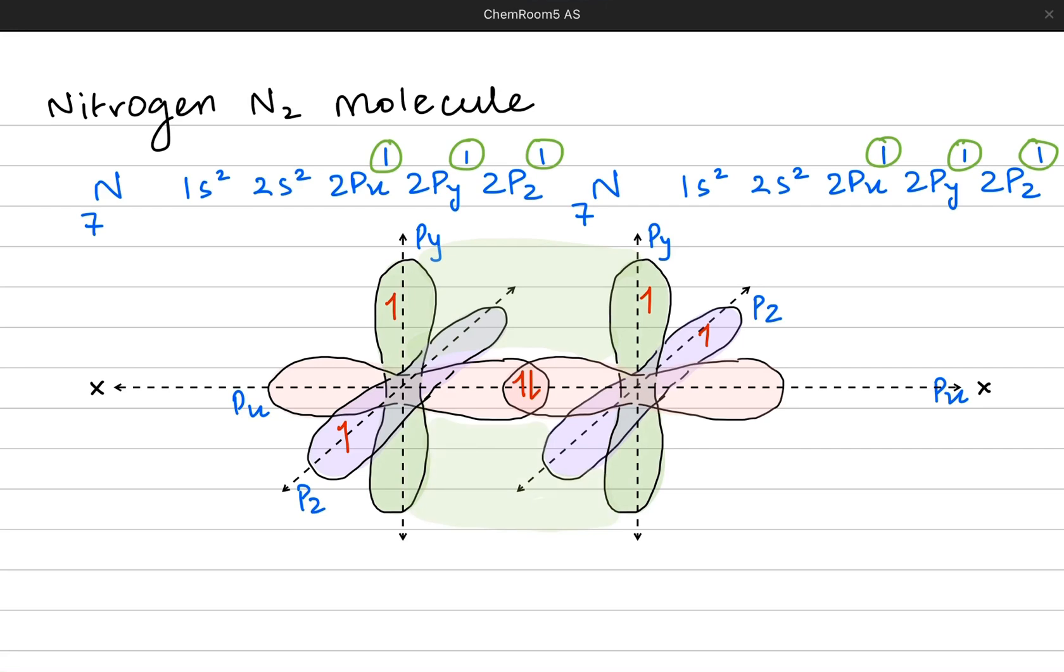Now the Py orbitals can create a pi bond by doing a sideways overlap where the electron density is spread above and below the sigma bond. Py does it because the Py orbitals can't do a sigma bonding or head-on overlap. So the electron density gets spread above and below the sigma bond. The Py orbitals were parallel, that is why they wanted to go for pi bonding.